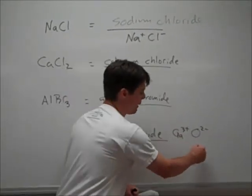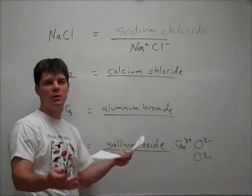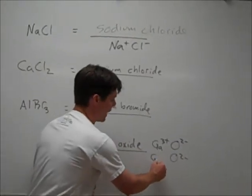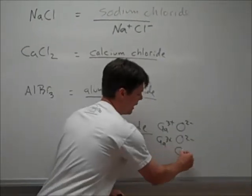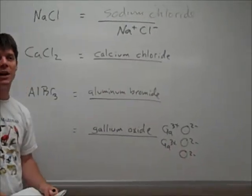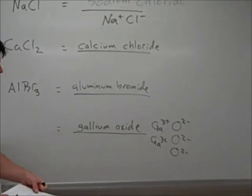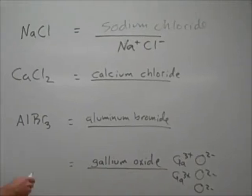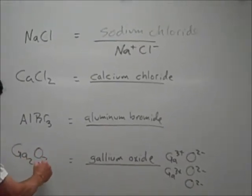Right now, I've got too much positive, so I'll add another oxide. Now I've got plus-three. I've got minus-two, minus-two, so I'm not at zero yet. Let's add another gallium. Now I've got plus-six, minus-four. So we can see that we just need one more oxide. So we found the common multiple here of two and three. It is six. So the way that we would write the formula for this compound would be Ga2O3.